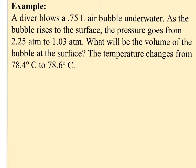So for example if I take a look at this problem and again either write down or highlight my information, a diver blows a 0.75 liter air bubble. So that's the first volume that's being given to me. And as the bubble rises to the surface the pressure goes from 2.25 to 1.03 so I've got P1 is 2.25 atmospheres and then P2 is also given it goes down to 1.03 atmospheres.